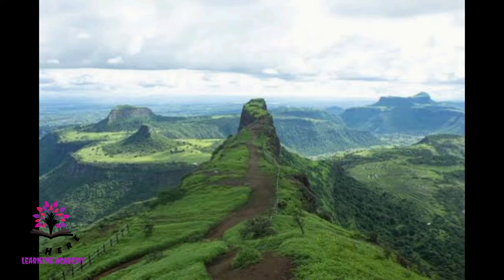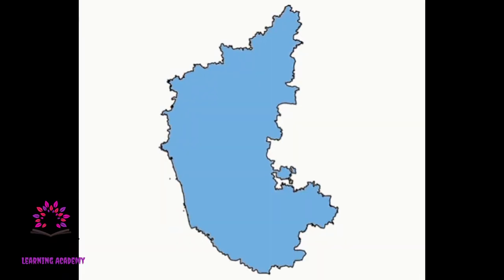This region consists of ranges of the Western Ghats, also called the Sahyadri. It is about 400 kilometers in length.